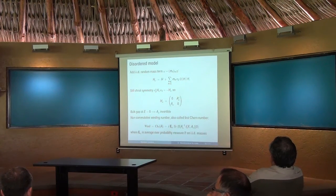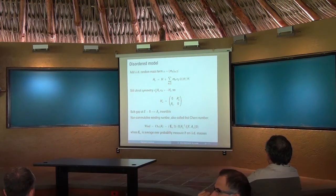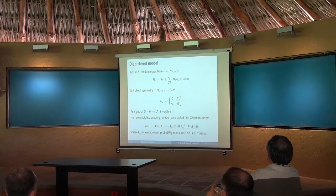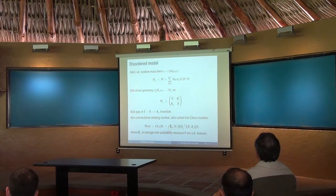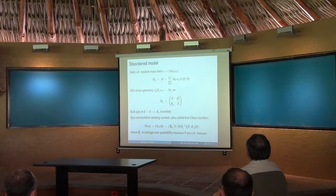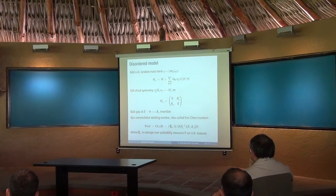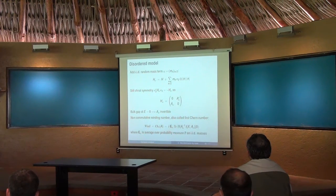If you add disorder — for example by adding a random mass term — the same fact remains true. You have one bound state, and that bound state equals a winding number. But the winding number now cannot be calculated by simple Fourier analysis anymore. You have to calculate it with the non-commutative substitute: instead of derivation by quasi-momentum in Fourier space, you take a commutator with the position operator. You put in the operator which should have a winding inside the usual formula for the winding number, then take the commutator with operator A multiplied by its inverse. Instead of integration over quasi-momentum, you take a tracial state — given by taking expectation with respect to disorder and taking the matrix element at the origin.